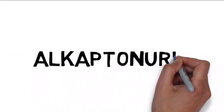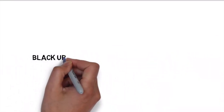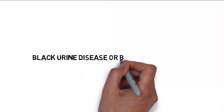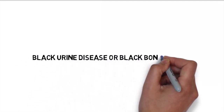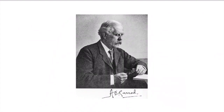Today I am going to talk about alkaptonuria. Alkaptonuria, also called black urine disease or black bone disease, is one of the four disorders originally defined as inborn error of metabolism by Archibald Garrod.